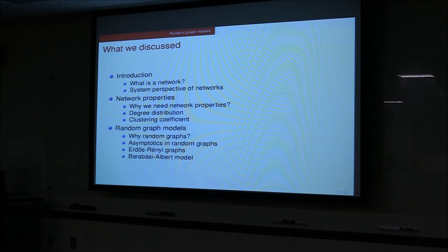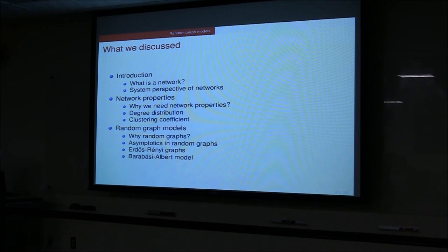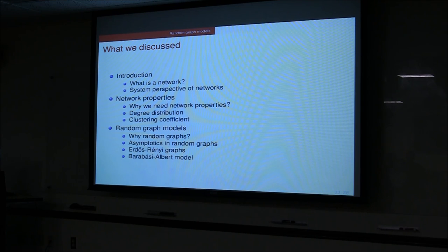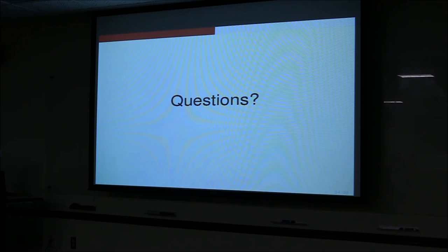To recap: we described what a network is and why we study networks. We looked at two primary network properties — degree distribution and clustering coefficient. We introduced random graphs and motivated their use, and examined two specific models: the Erdős–Rényi graph and the Barabási–Albert model, showing each has certain limitations. Thank you.